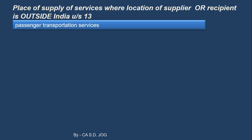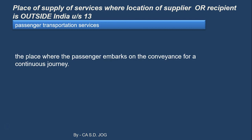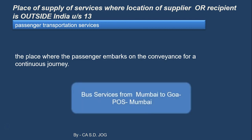Next: passenger transportation services. This is very similar to Section 12. The place where the passenger embarks on the conveyance for a continuous journey — where the person starts the journey, where he boards that particular bus — that place will be the place of supply of service. For example, a bus service is hired from Mumbai to Goa; a company wants to take its employees for some training purpose. What will be the place of supply? Where the passengers embark on the conveyance — so where these employees are actually getting into the vehicle, at Mumbai. That is the place of supply. Place of supply will be Mumbai, similar to what we discussed under Section 12.